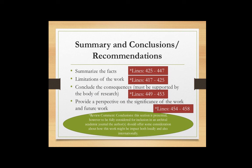When writing the Summary and Conclusions or Recommendations section, start by summarizing the facts and talking about the limitations of the work. Then conclude the consequences that need to be supported by the body of research — either supporting or disagreeing with past research. Typically you want to provide perspective on the significance of your work, place it in the context of existing work, and then discuss future work and where this research might go. The next four slides provide examples for your reference.